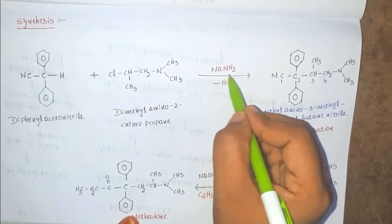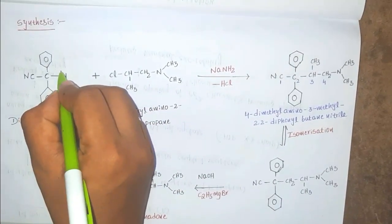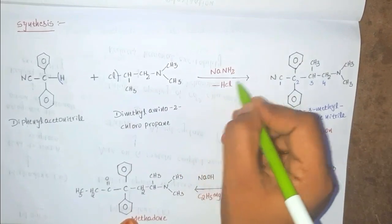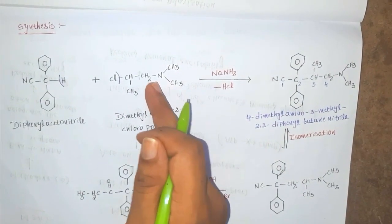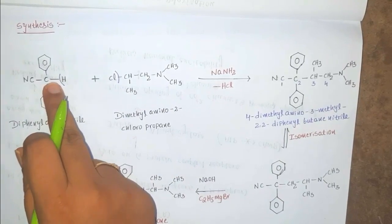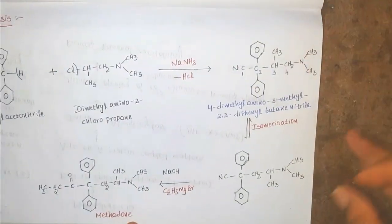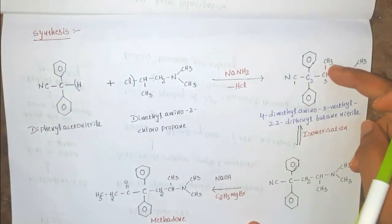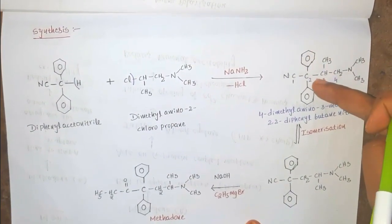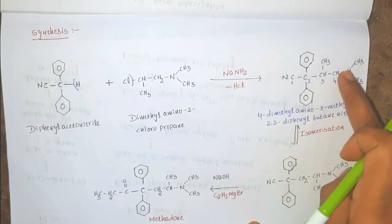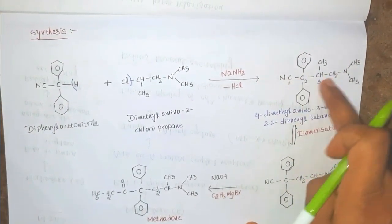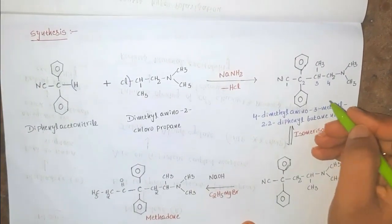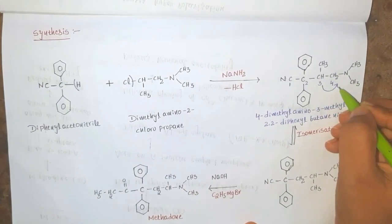On reaction with sodamide, H and Cl are eliminated — that is, HCl is eliminated — and this dimethylaminopropane is directly attached to the carbon to form an intermediate called dimethylamino-3-methyl diphenyl butanenitrile.